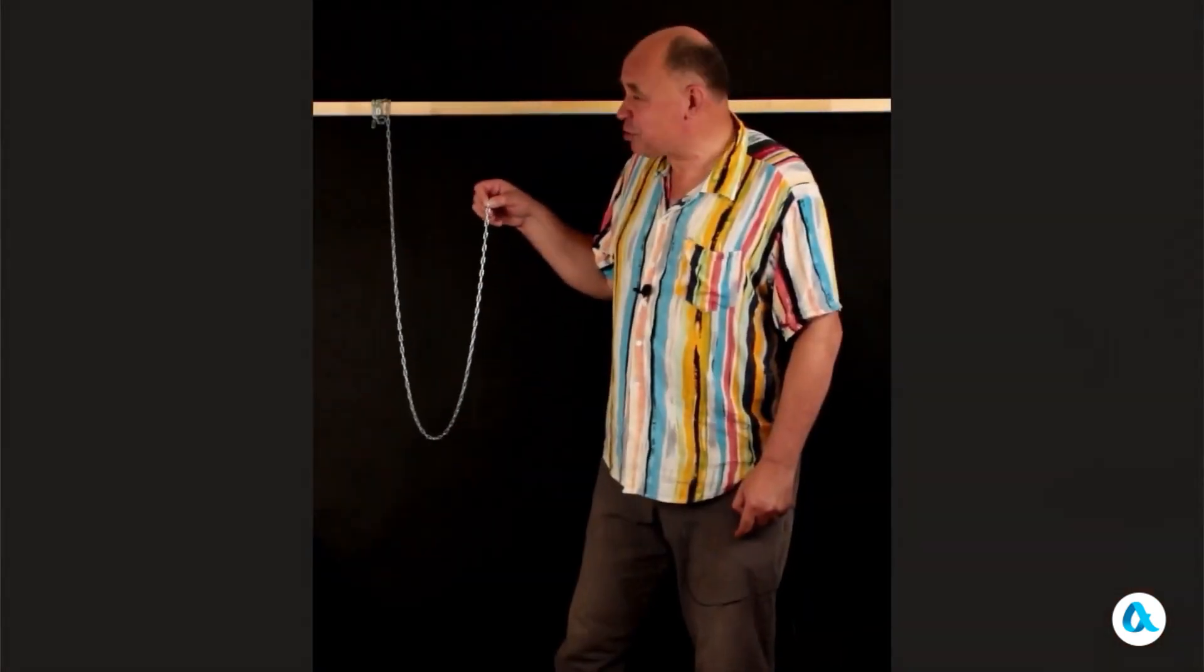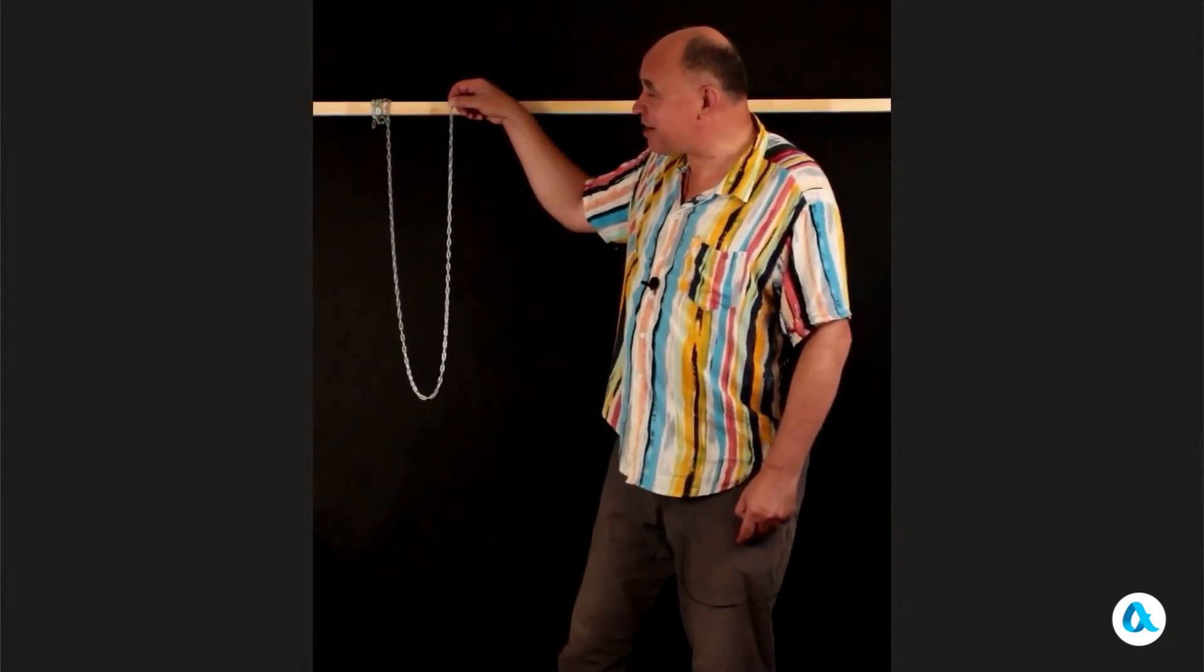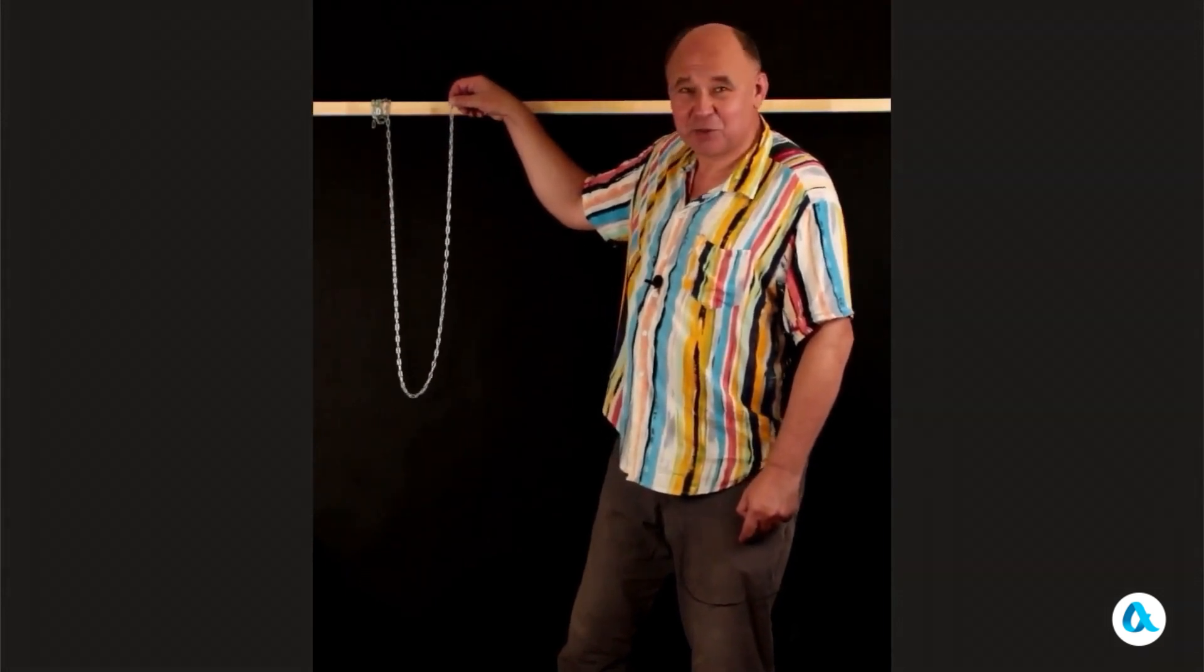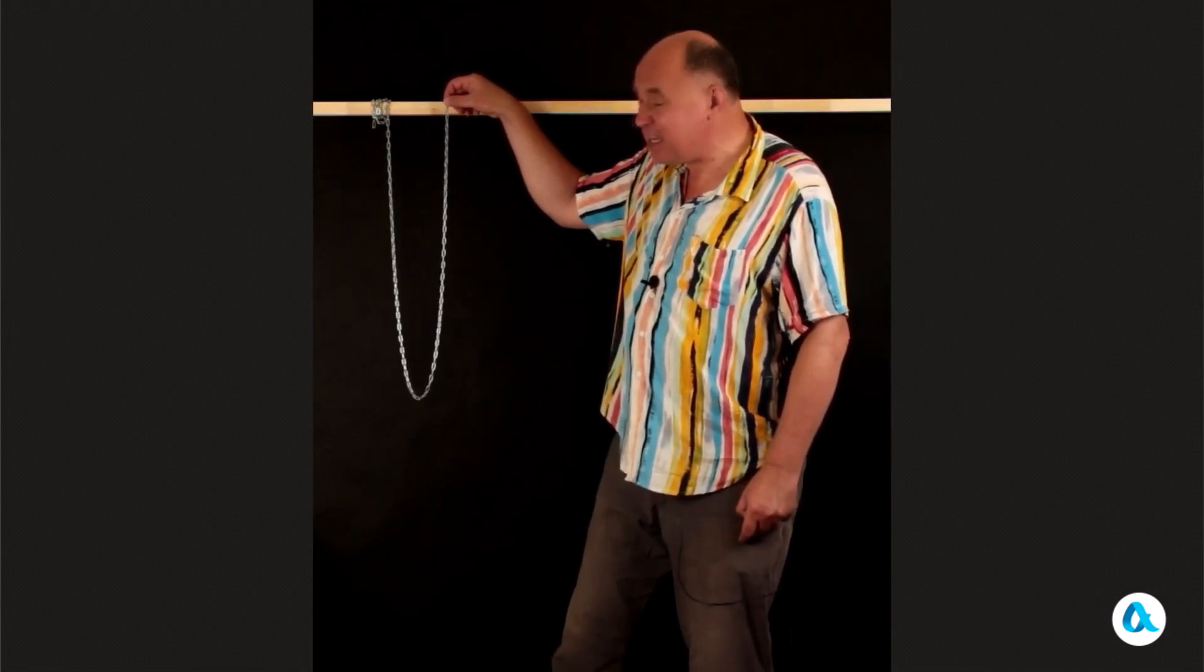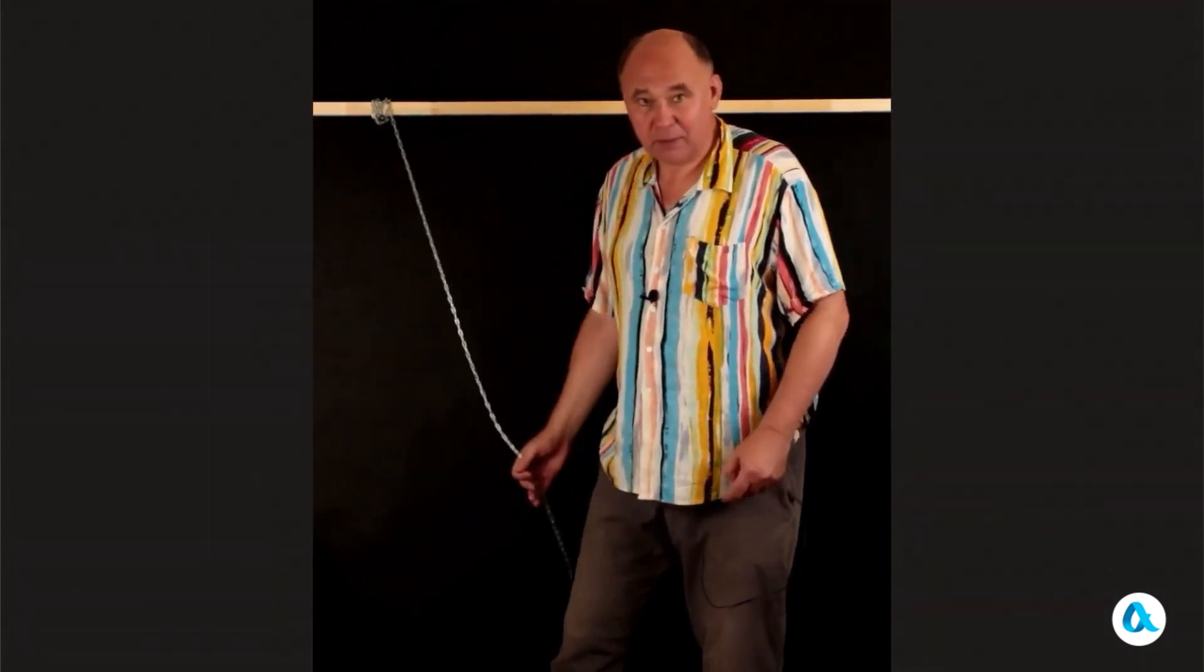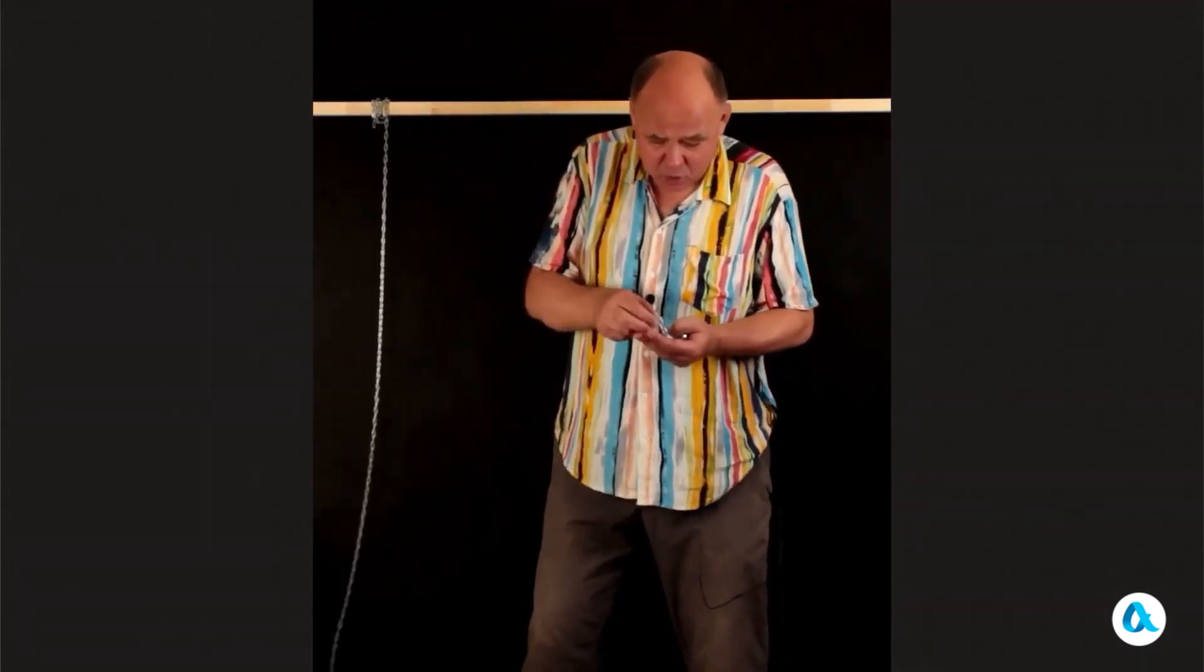We can completely trust this. And now we need to explain why the end of the chain overtakes the ball. Where does this additional acceleration come from? And some might say that the upper end of the chain is moving down with acceleration more so because it is affected by the weight of all the links that are below it. But let's conduct a control experiment.